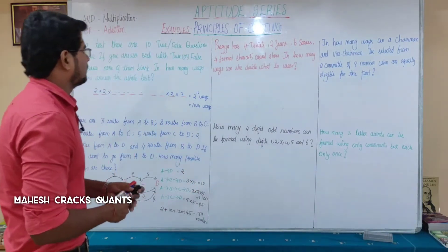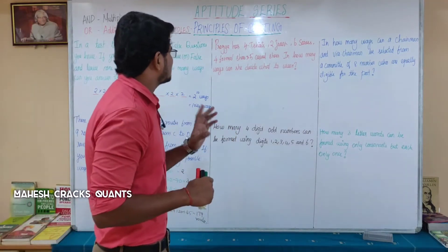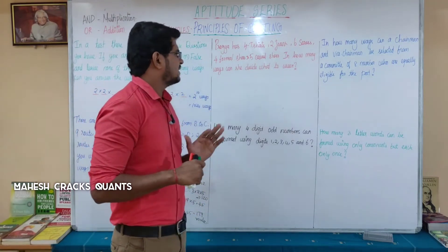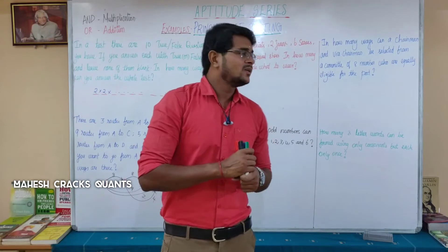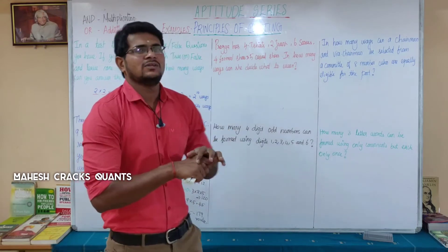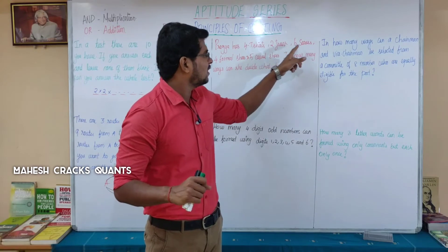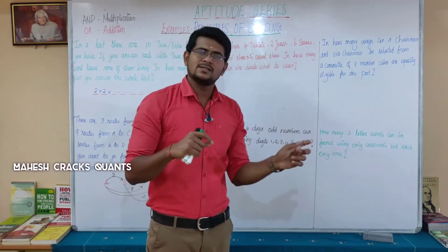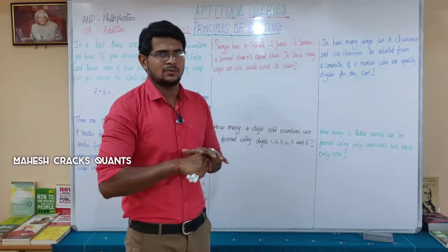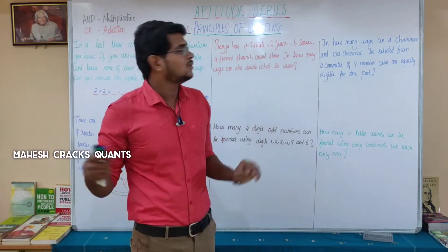Next question. Pragya has four T-shirts, two jeans, six saris, four formal shoes, and five casual shoes. In how many ways can she decide what to wear? She chooses either a T-shirt with jeans, or a sari. And then separately she chooses formal or casual shoes. What do you choose for the top?